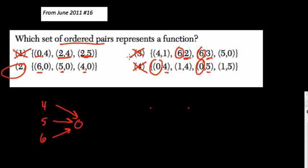So the only reasonable choice now is 2. And that's (6,0), (5,0), (4,0). All right, thanks. I'll see you next time.